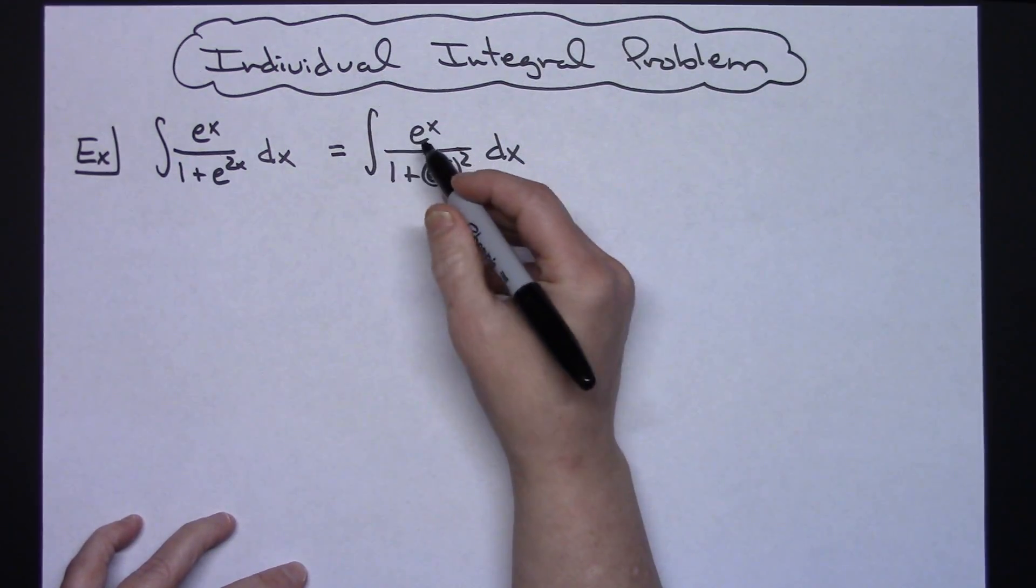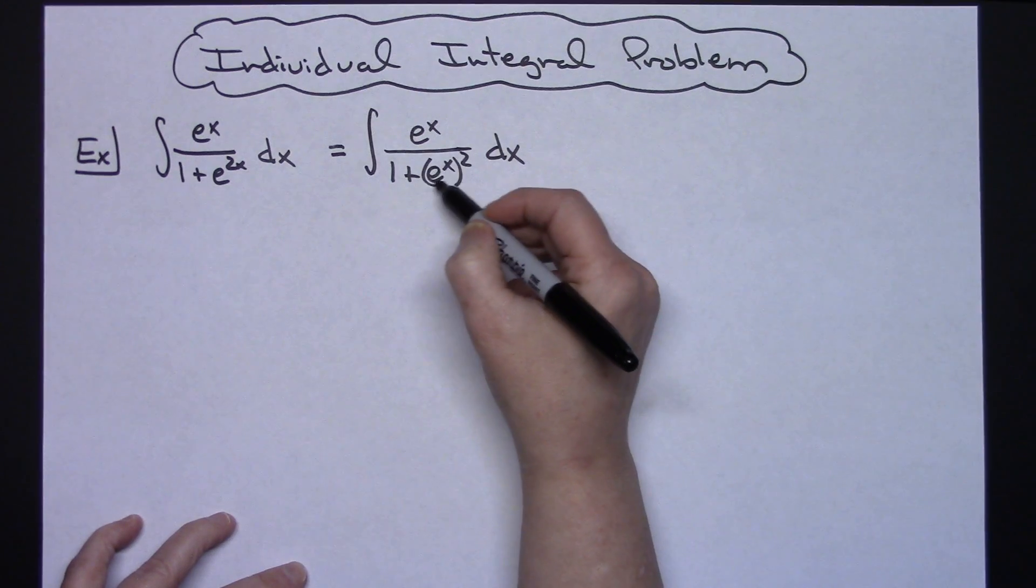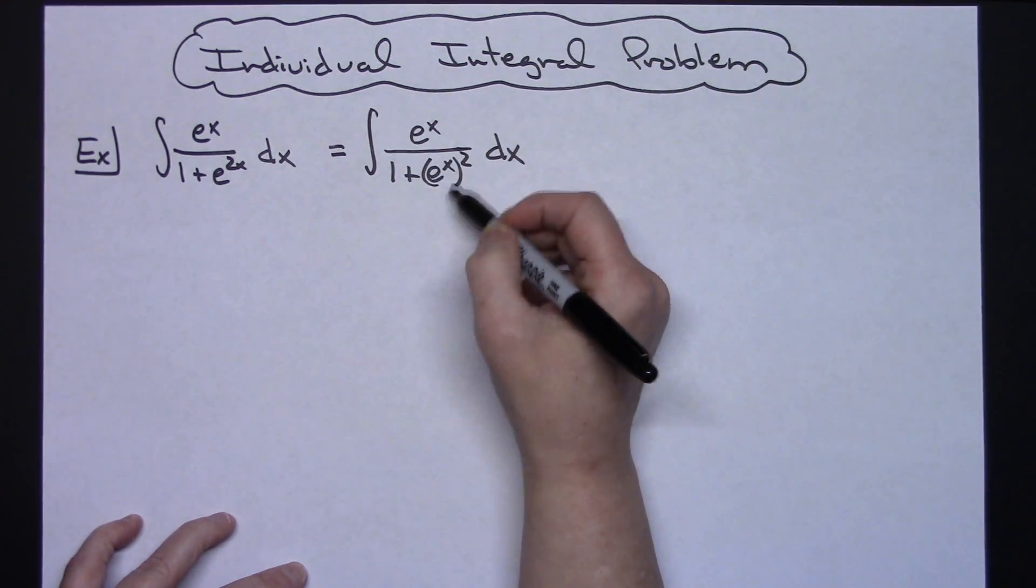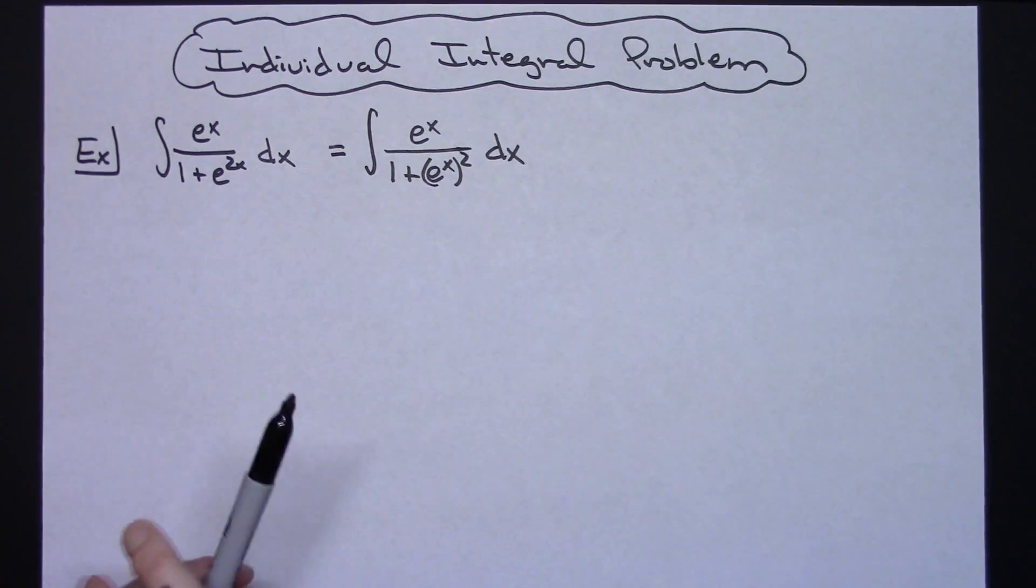Now what that does is that allows me to see that I've got an inside function here. I've got something being squared, so that's where I'm going to start with my u substitution.